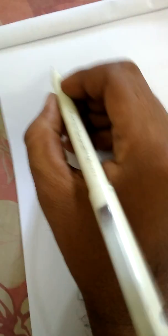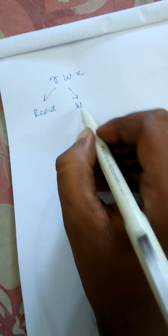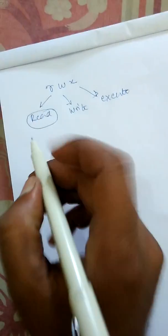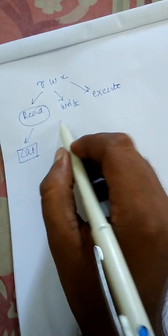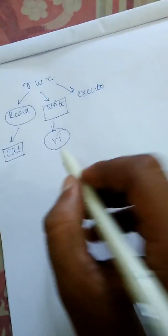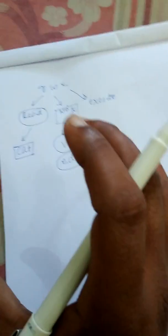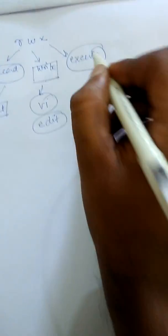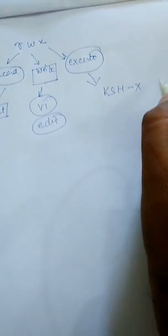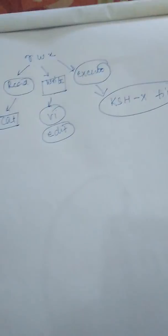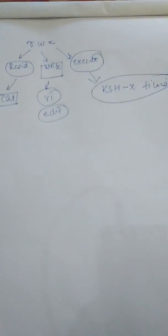Every file will mainly have rwx privileges — that is read, write, and execute. Read means you can read the file using cat. Write means you can edit the file, you can change the content of the file. Execute means if the file is executable, you can execute it using ksh -x filename.